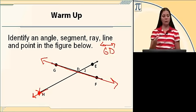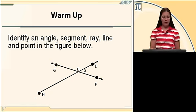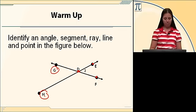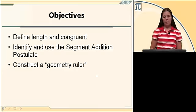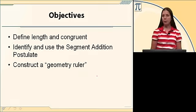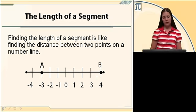Points on the figures are all those single letters. The points we have are point H, point G, point D, point E, and point F. The objectives for this lesson are to define length and congruent, identify and use the segment addition postulate, and construct a geometry ruler. Let's start by finding the length of a segment.